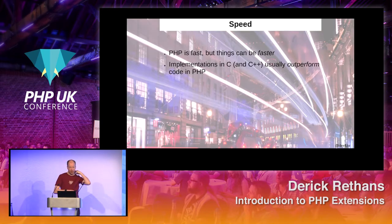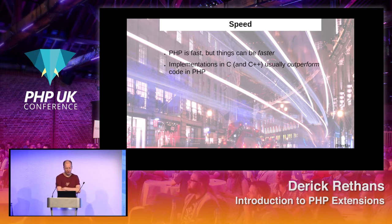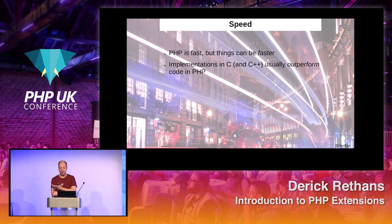And then the third reason is speed. PHP is a very fast language, especially in PHP 7, but C is still going to be faster and there's no way around it. Algorithmic implementations in C often outperform code in PHP. That should be quite obvious, really.